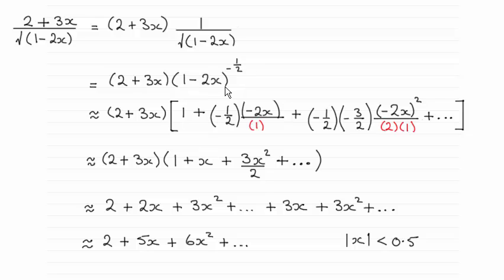And then assuming that you're familiar with the binomial expansion, if not do check it out on my website, then we've expanded here. So remember for the binomial expansion it's 1 plus the power which we call n. That's minus a half, multiplied by the x term which is minus 2x, and then it's divided by 1 factorial which is just 1.